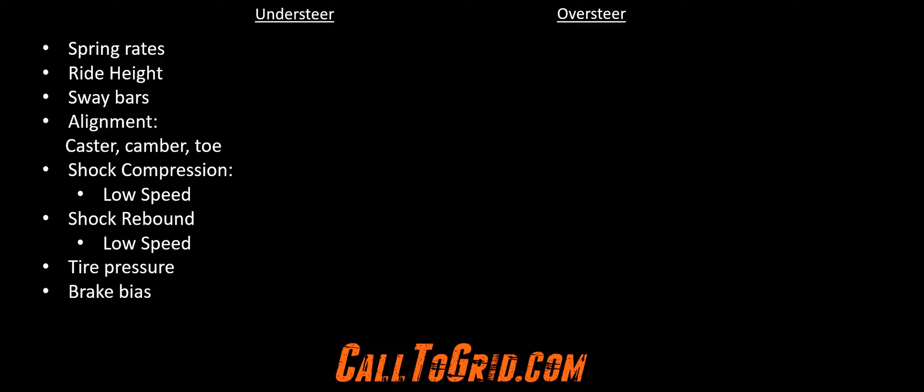The first easy adjustment to make is brake bias, if you have a brake bias valve. If you don't, you can adjust brake bias by experimenting with different brake pad compounds. You can also adjust brake bias with diameter brake lines, but that may be more suitable when back at the shop. For an understeer condition, consider moving brake bias to the rear — either adding more brake torque to the rear or less up front. For oversteer, move brake bias to the front — either more torque to the front or less to the rear.